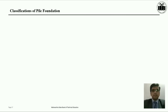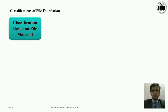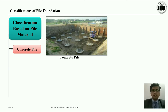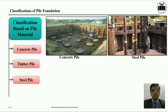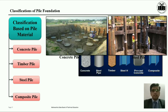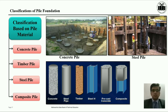Classification of pile based on the material used for pile construction: concrete pile — it may be a precast concrete pile or cast-in-situ concrete pile; timber pile — having low bearing capacity and made up of good quality timber; steel pile; and lastly, composite pile — which can be made up of a combination of two or three types of piling material.